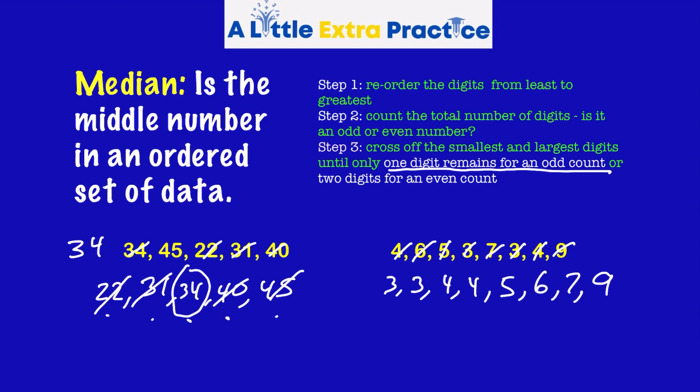Step two, count the total number of digits. One, two, three, four, five, six, seven, eight. Okay, step three, cross off the smallest and largest digits until only two digits remain for an even count. We're going to stop when we get to the last two.